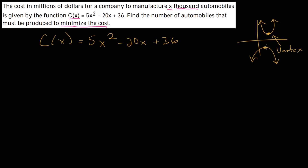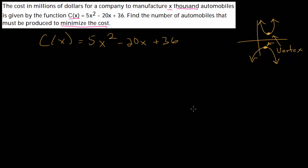We're trying to find the minimum, which means we're trying to find the lowest point, and we call that the vertex. If it was the downward-facing case, then the vertex would be the highest point. So with this quadratic, we just need to find the vertex. That vertex will tell us the amount of automobiles that will lead to the least amount of cost.